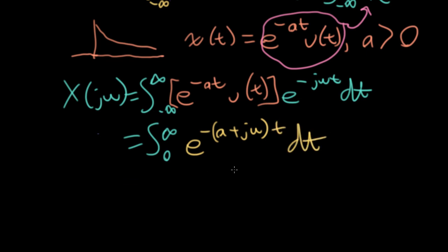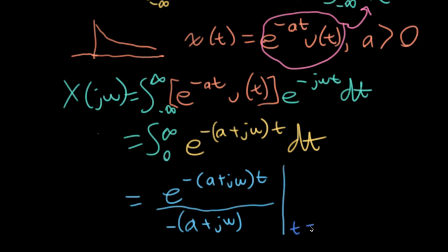And now we can do some calculus. And now we can write e to the minus a plus j omega t all over a plus j omega with a minus sign here. If you imagine taking the derivative with respect to t, this stuff here in the exponent will come down and cancel with the stuff in the denominator evaluated at our limits of t going from zero to infinity.